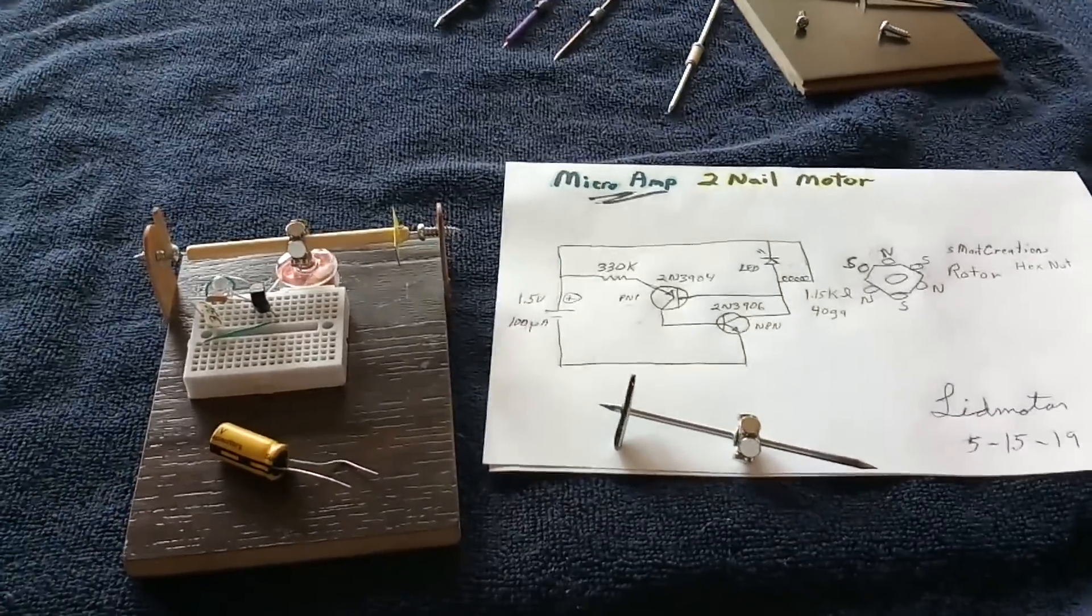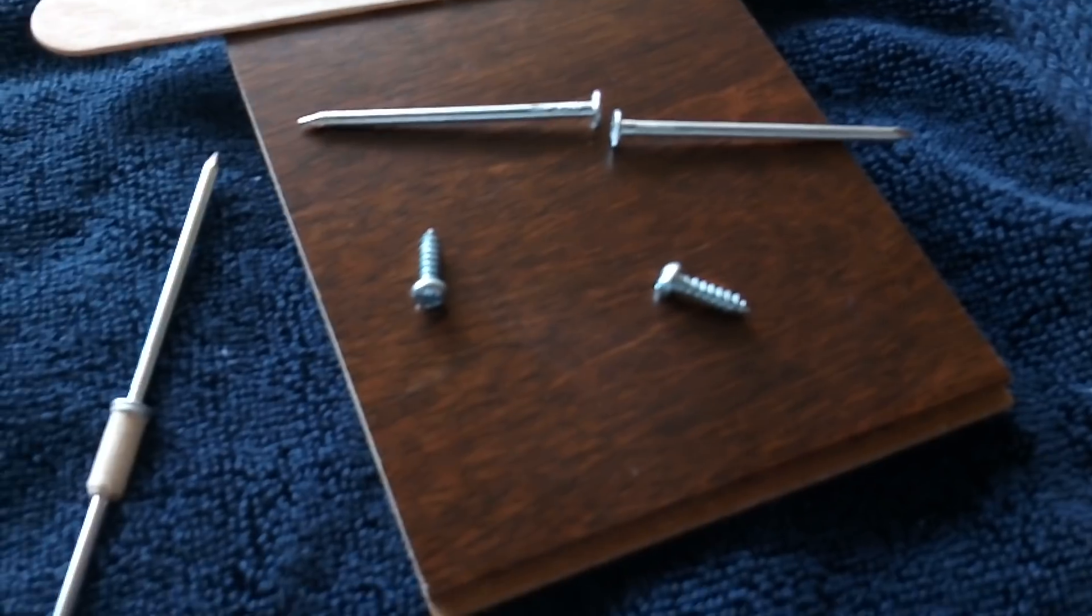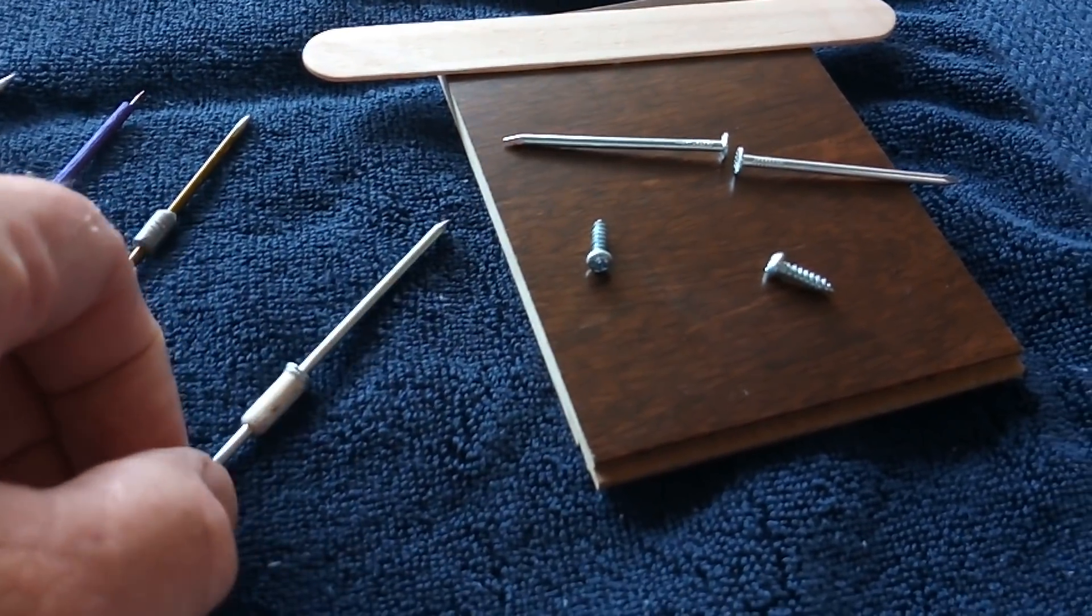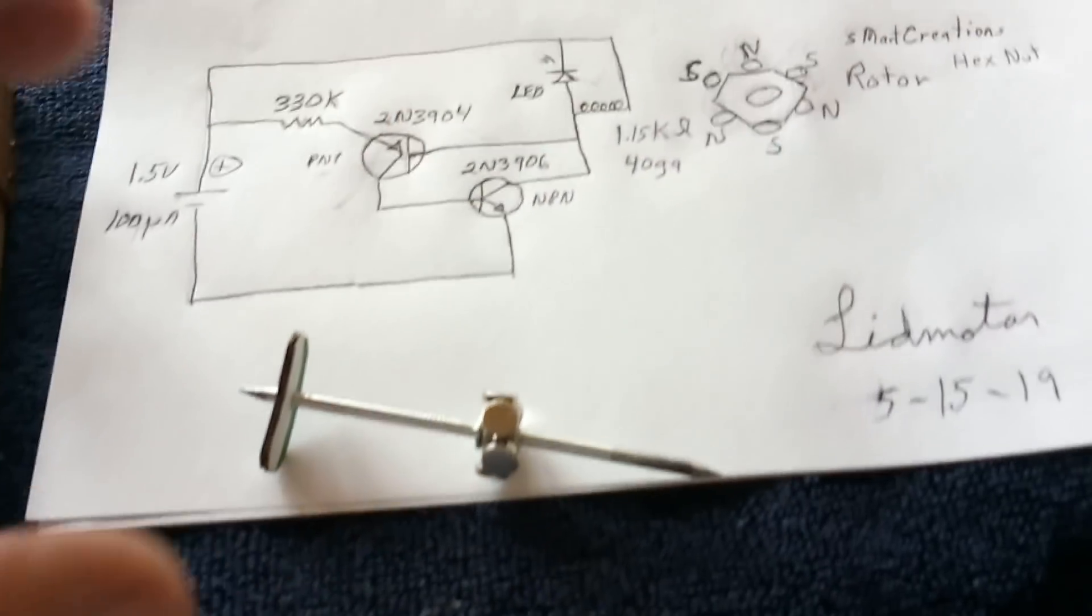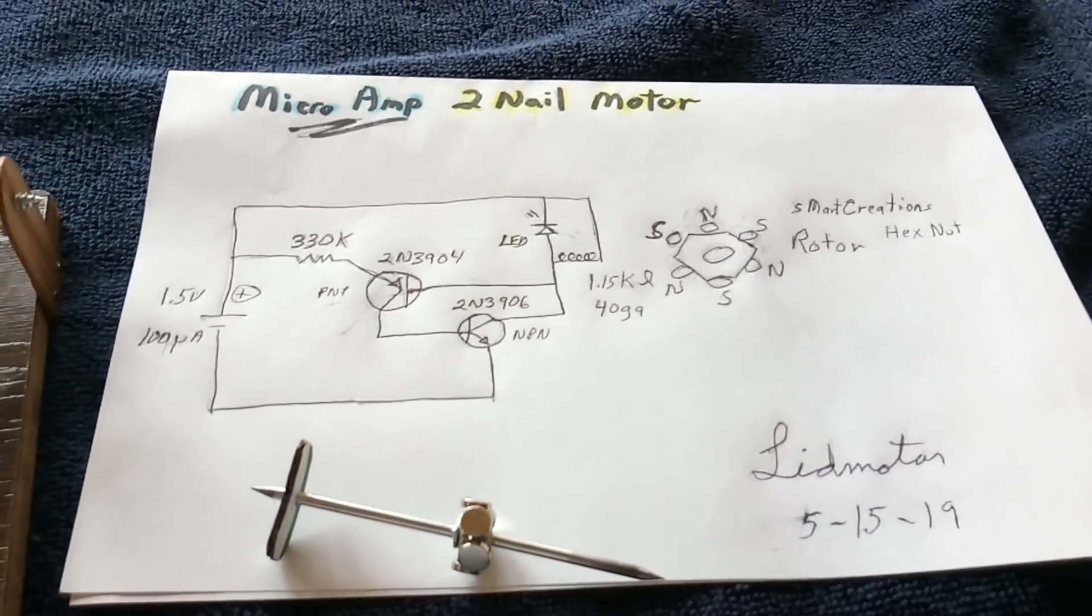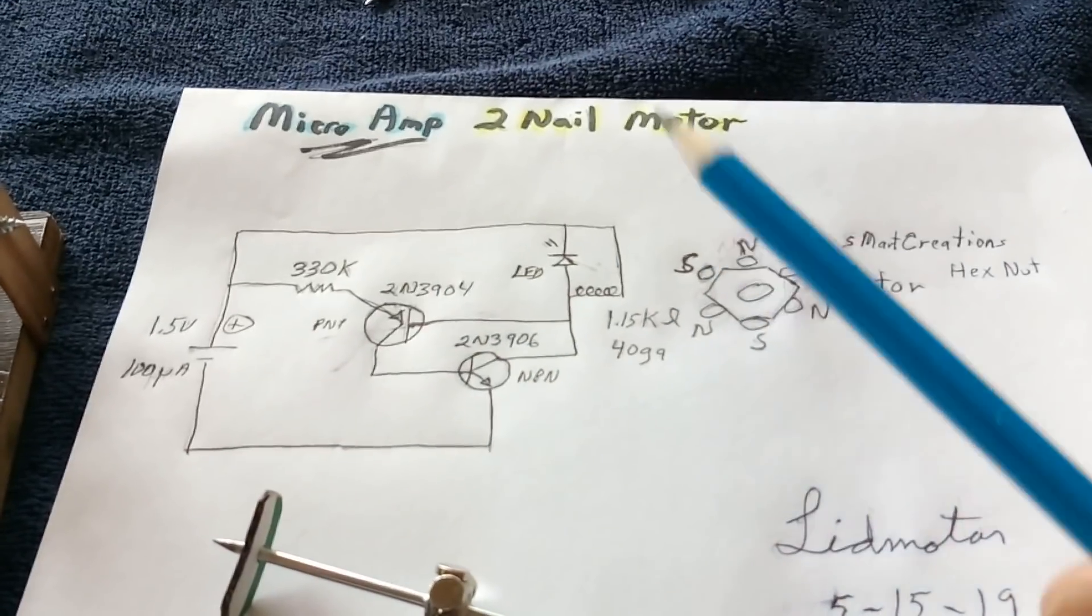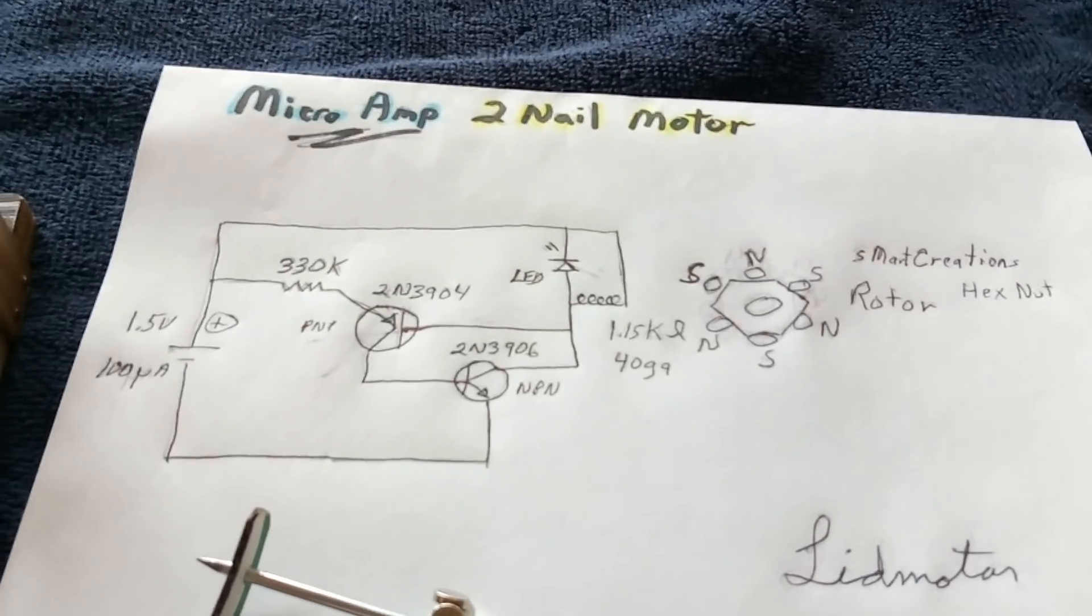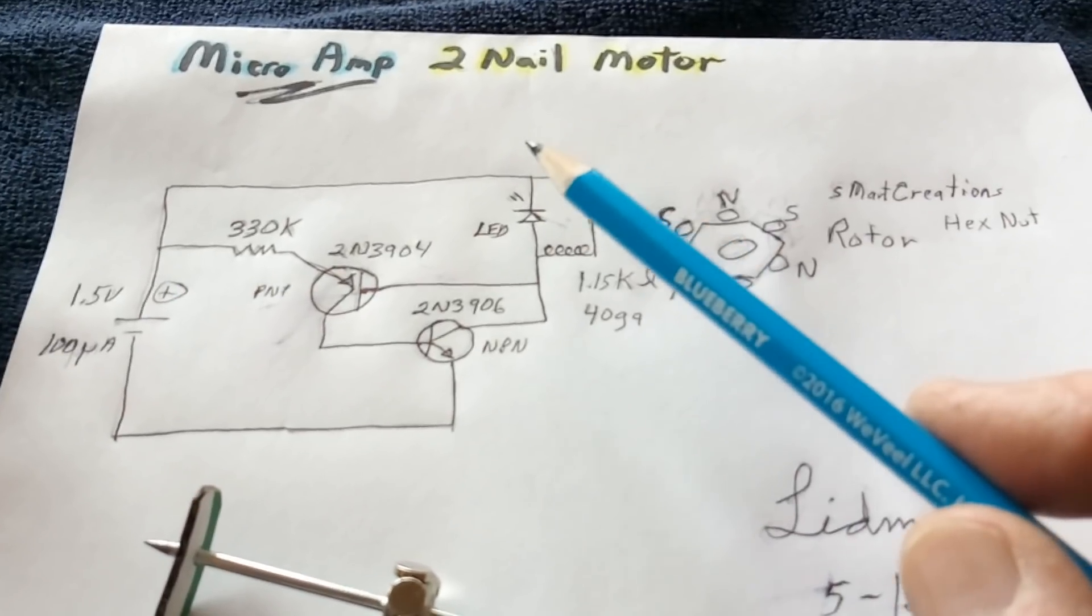Okay, well I spent the last couple of days working on this motor that I called the two nail motor that I made by just gluing a couple of nails together and making a rotor out of it, then putting a hex nut on it and magnets on it. I carried the project a little further and made a micro amp two nail motor. I'm using the same name because it's just a cute name. I liked it, so even though I'm not using the two nails anymore for the rotor, I'm still calling it the two nail motor.